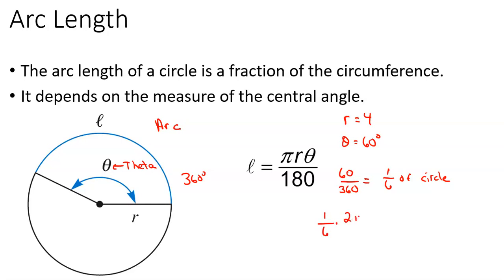If I want to walk around one-sixth of the circle, I need one-sixth of the circumference — which is 2 times pi times the radius. So that gives 8 pi over 6, simplified to 4 pi over 3 inches. Rather than memorizing pi r theta over 180, I prefer to just remember I'm looking for a fraction of the circumference: take the angle measure, divide by 360, and multiply by the full circumference. Throw the formulas in from there.